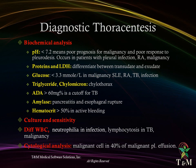Diagnostic thoracentesis is an indispensable tool for the diagnosis of causes of pleural effusion. The obtained fluid is analyzed as follows — biochemical analysis: pH below 7.2 denotes poor prognosis for malignancy and poor response to pleurodesis; proteins and LDH differentiate transudate from exudate; glucose decreases in malignancy, systemic lupus, rheumatoid arthritis, TB, and infections; triglycerides in chylothorax; adenosine deaminase above 60 mg% or 14 units per litre is diagnostic for tuberculosis; amylase in pancreatitis and esophageal rupture; hematocrit more than 50% indicates active bleeding. Other analyses include culture and sensitivity, differential white blood cells, and cytological analysis, which has a yield not exceeding 40% in malignant pleural effusion.